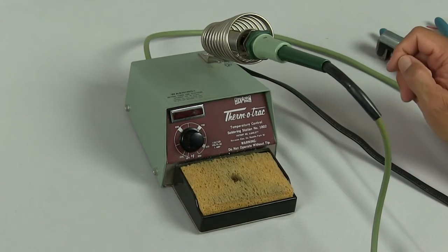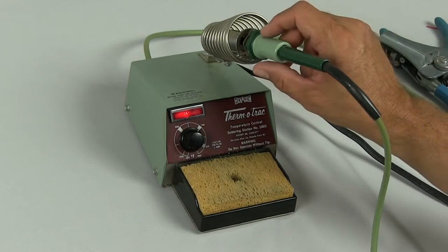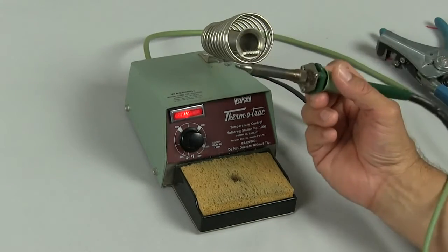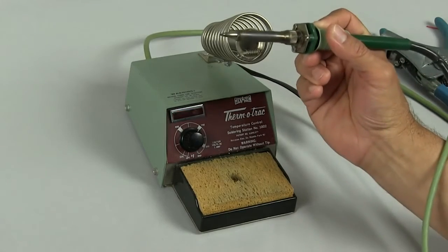When the light flashes that means your solder iron is hot and ready to go. So, the way you use your solder iron is, number one, don't touch any of the metal part. You will find that it is very hot.